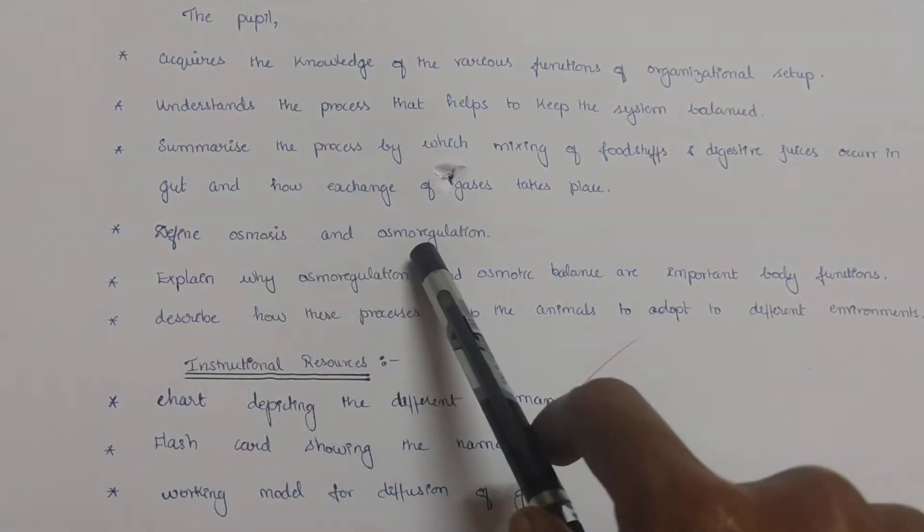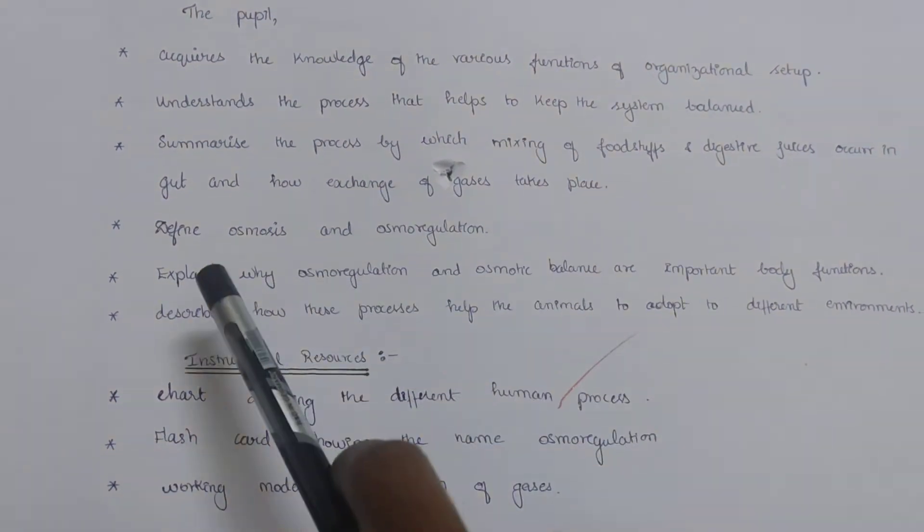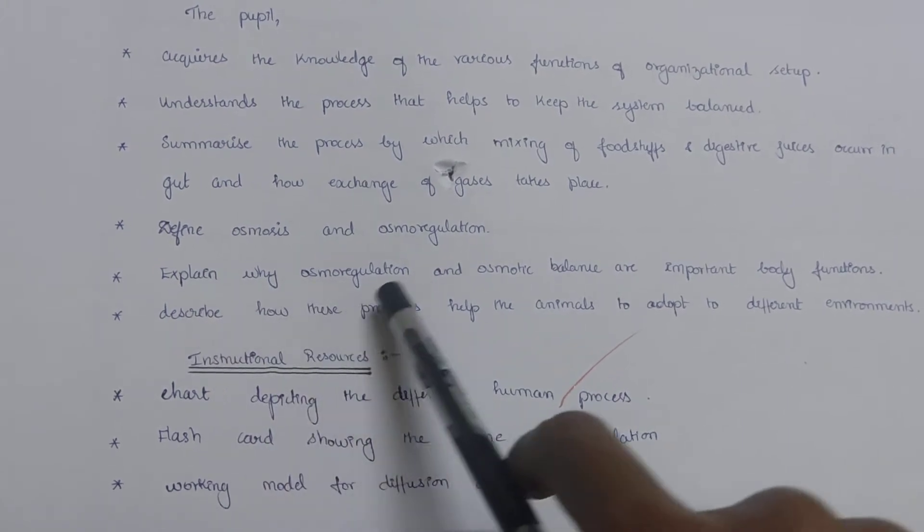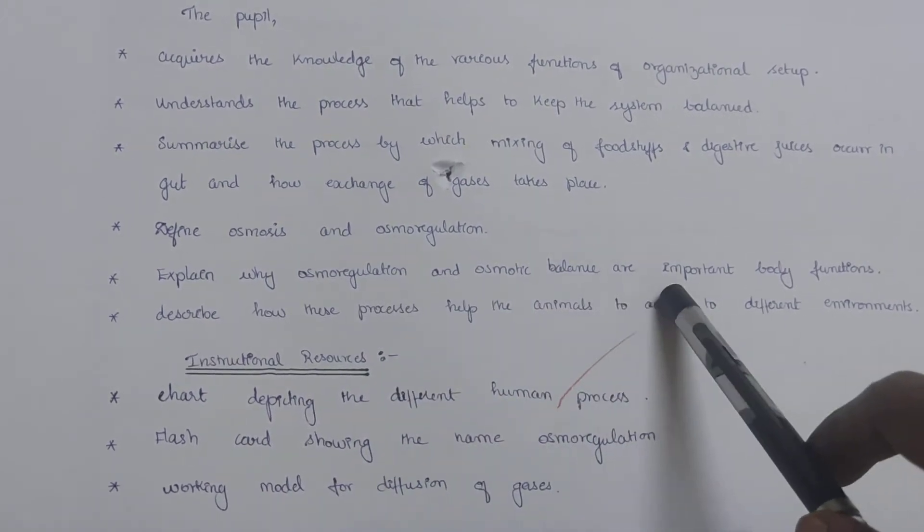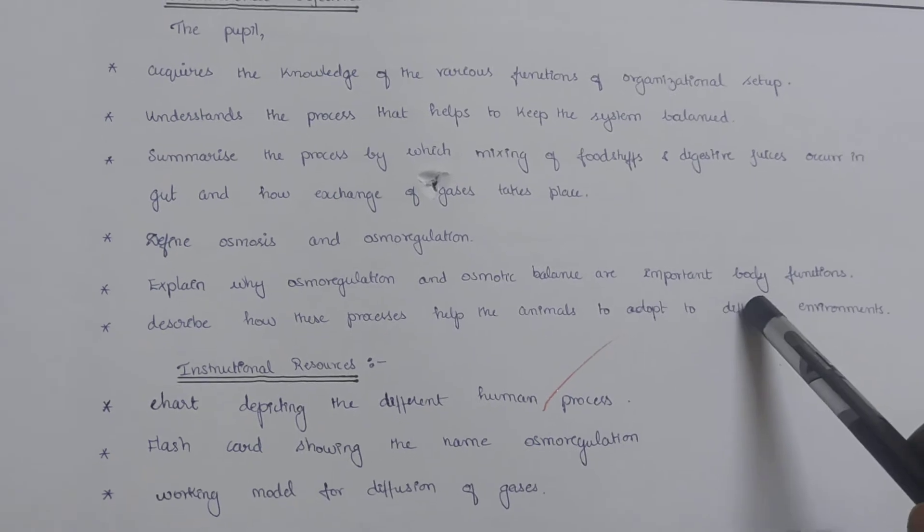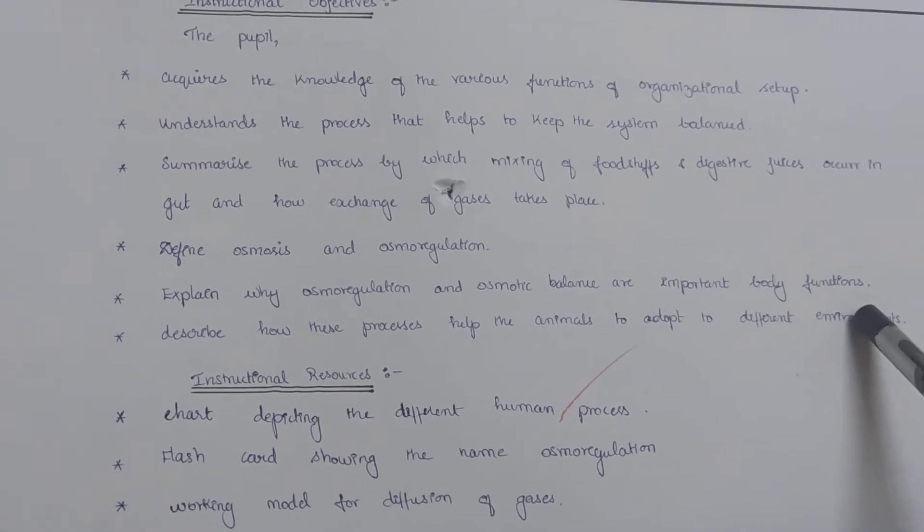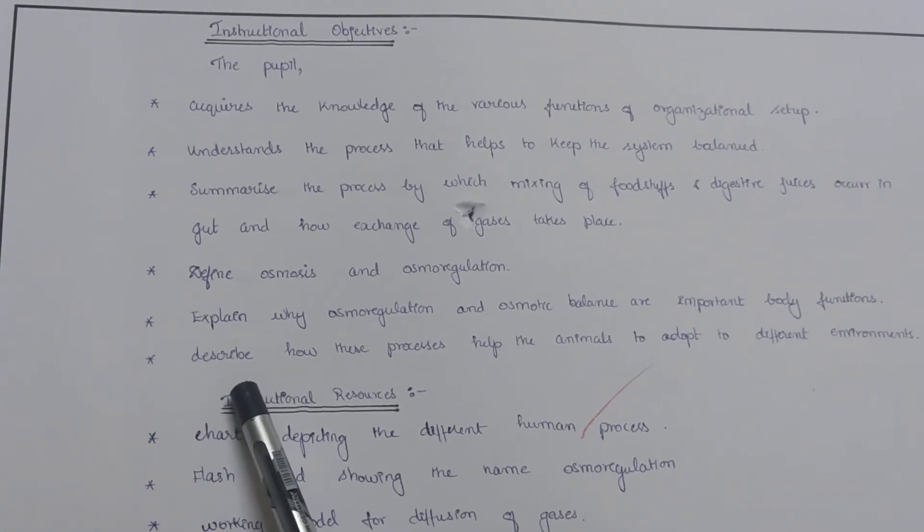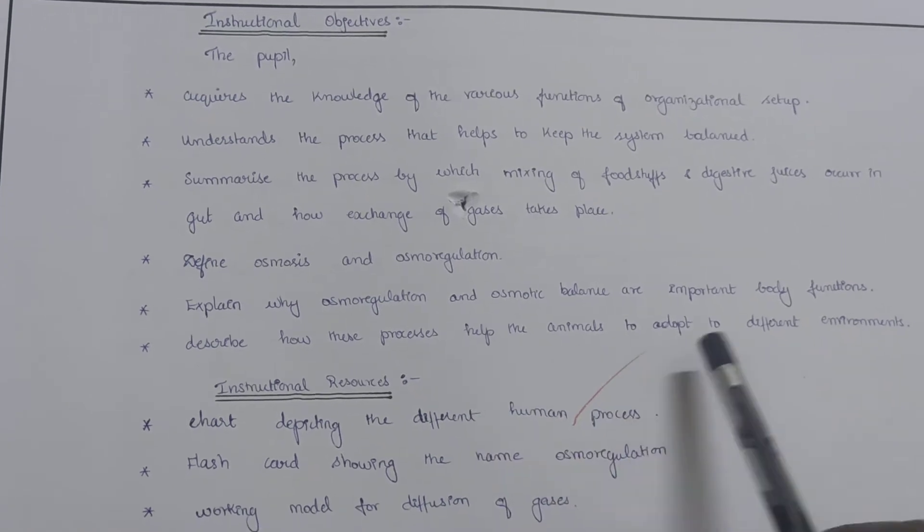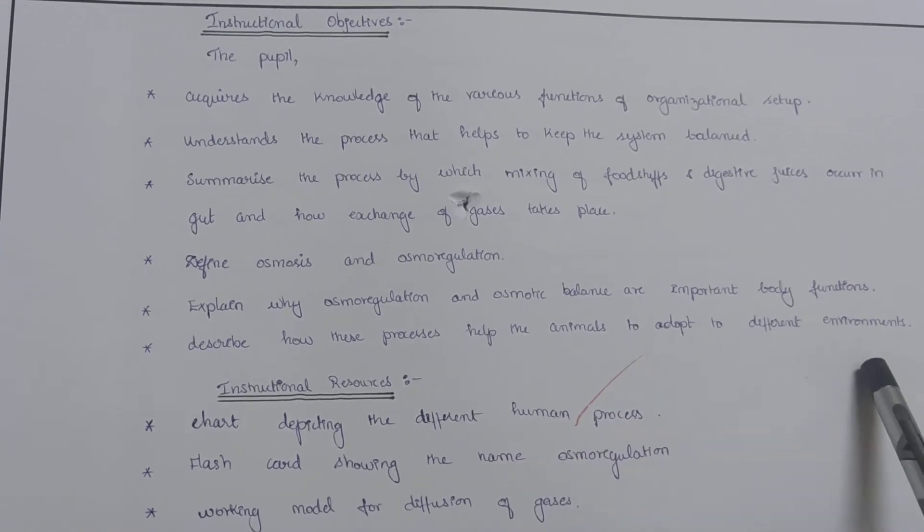Define osmosis and osmoregulation. Explain why osmoregulation and osmotic balance are important body functions. Describe how these processes help the animals to adapt to different environments.